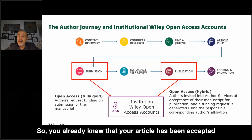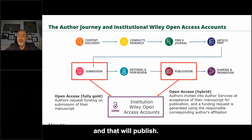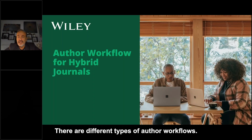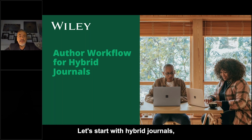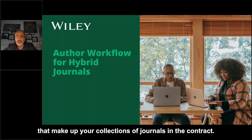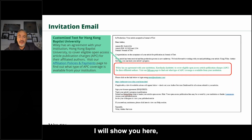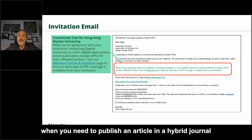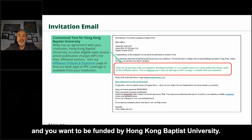So you already know that your article has been accepted and that it will publish. There are different types of author workflow. Let's start with the hybrid journals, which are basically the majority of the journals that make up your collections in the contract. I will show you what happens when you need to publish an article in a hybrid journal and you want to be funded by Baptist Hong Kong University.